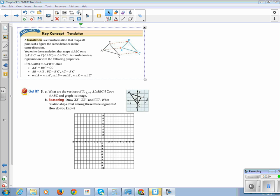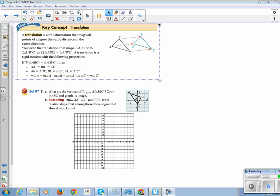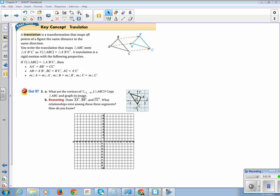One of the key concepts from this section is the idea of a translation. A translation is a transformation that maps all points of a figure the same distance and in the same direction. We write the translation triangle ABC onto triangle A prime, B prime, C prime. The little tick mark here means we say it as prime. So it looks like T is for translation, triangle ABC is equal to triangle A prime, B prime, C prime.